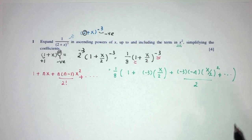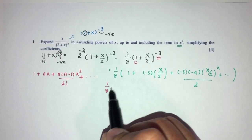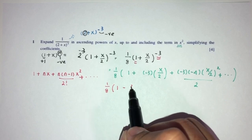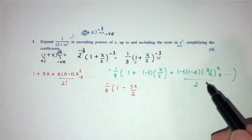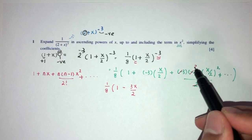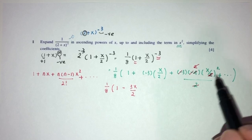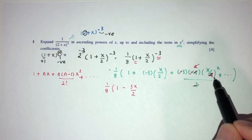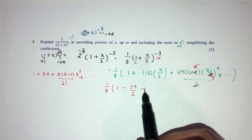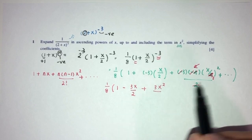Now, simplify. We have 1 over 8, same thing again, 1 minus 3x over 2, and then here we have 2, this will cancel out. This is 4 actually. If you expand this, it becomes 4, so it becomes 2 here, so it becomes plus 3x squared over 2.